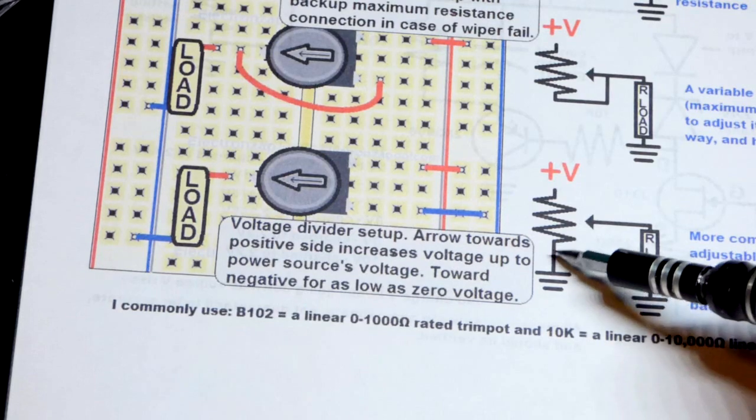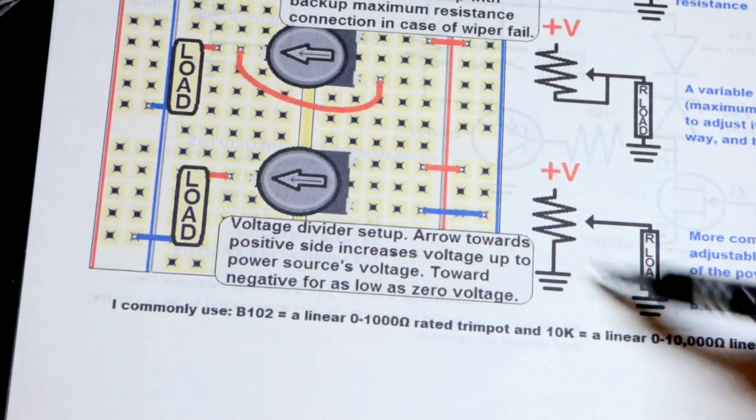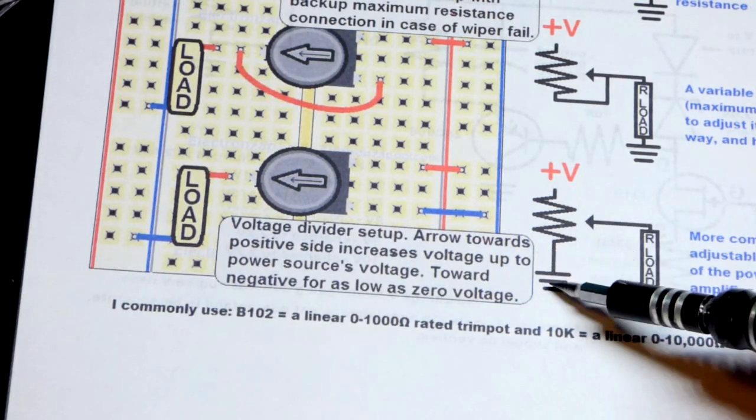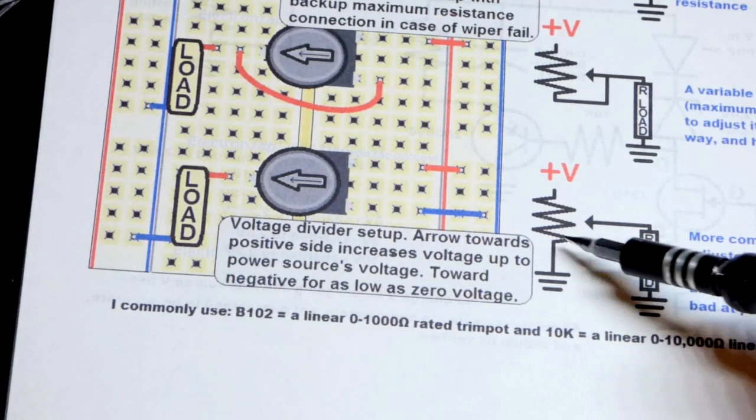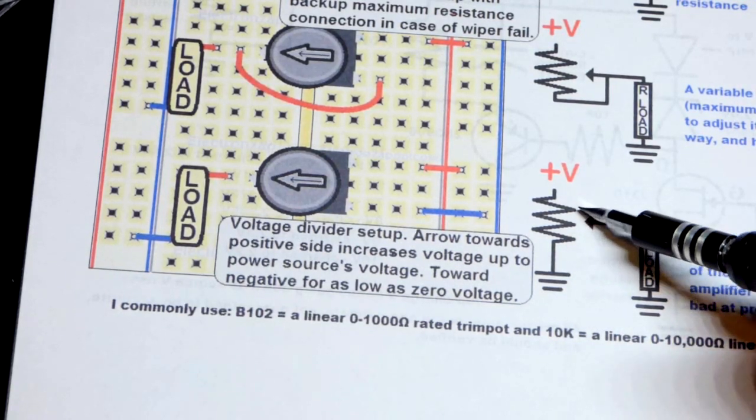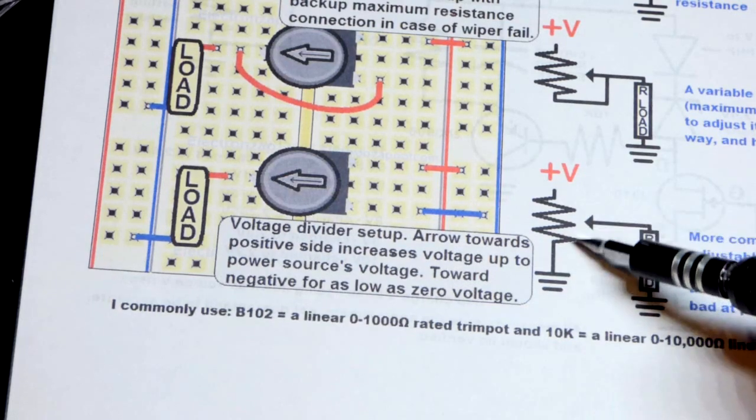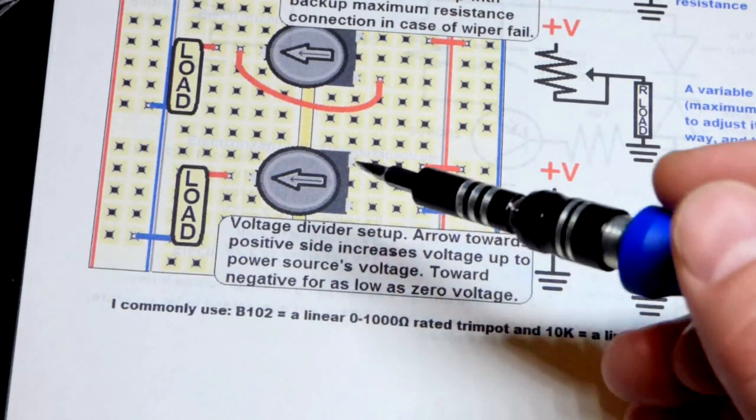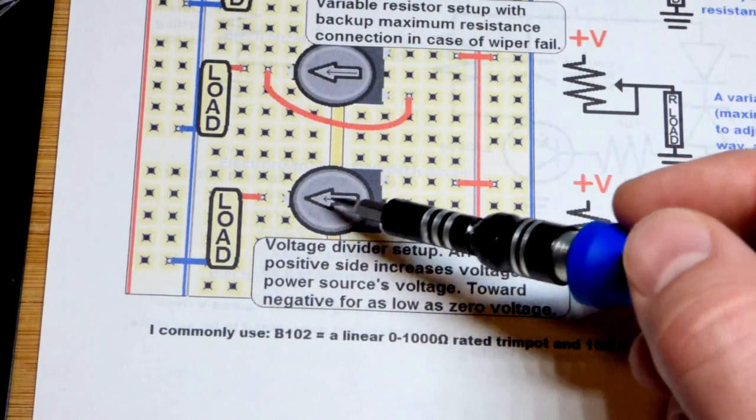You can see that's both sides there. It's a direct connection from ground on both sides. Any current that goes through the resistor will just go to ground, ignore the load. You have zero volts. You can dial it to any voltage in between those two points that you want.